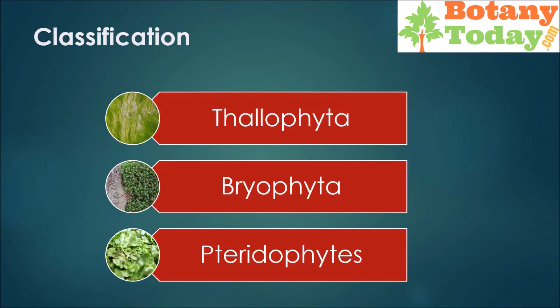Classification of cryptogamy: cryptogames are further divided into three groups — Thalophyta, Bryophyta, and Pteridophytes.